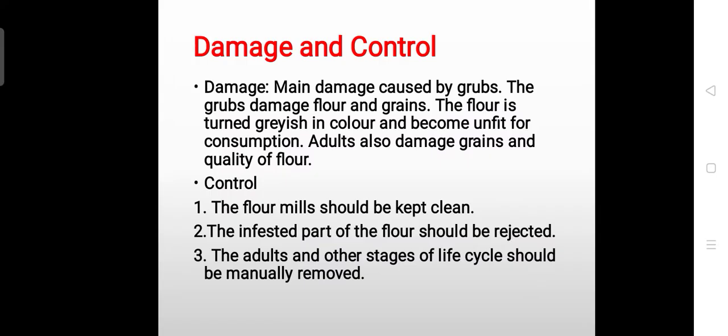Regarding damage and control: grubs damage flour and grains. The color of the flour changes to grayish and becomes unfit for consumption. Adults also damage grain quality. To control it, flour mills should be kept clean, the infested part of the flour should be removed, and adults and other life stages should be manually removed and destroyed.